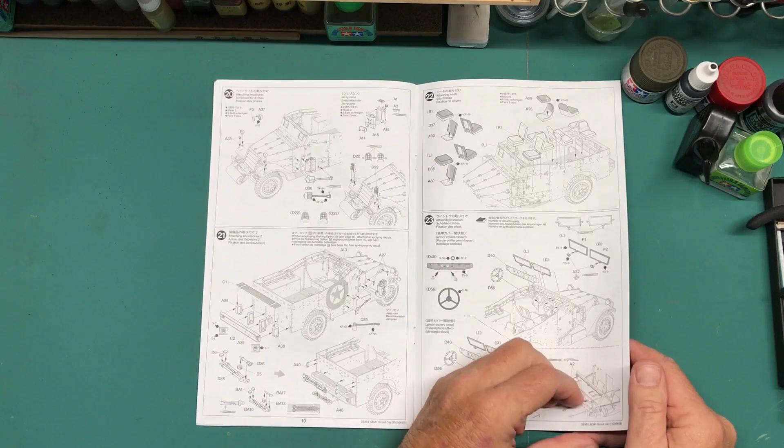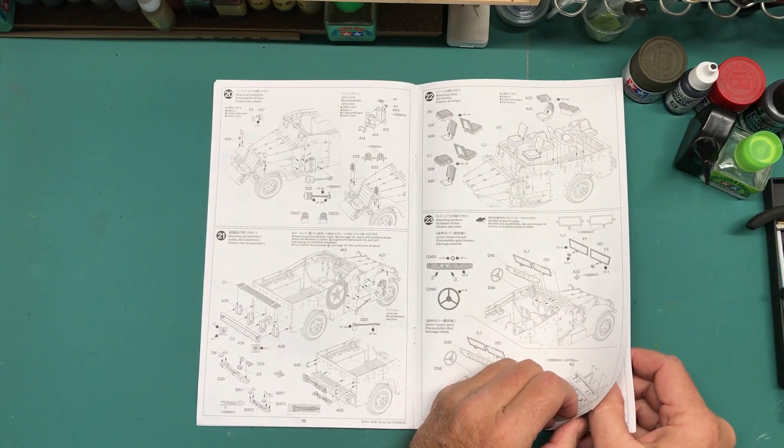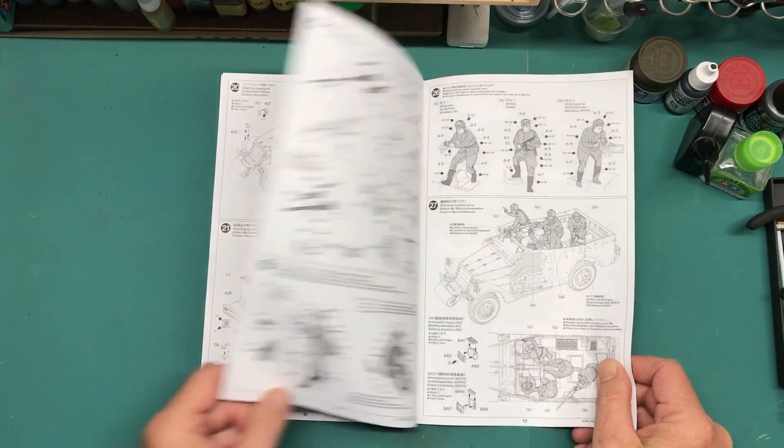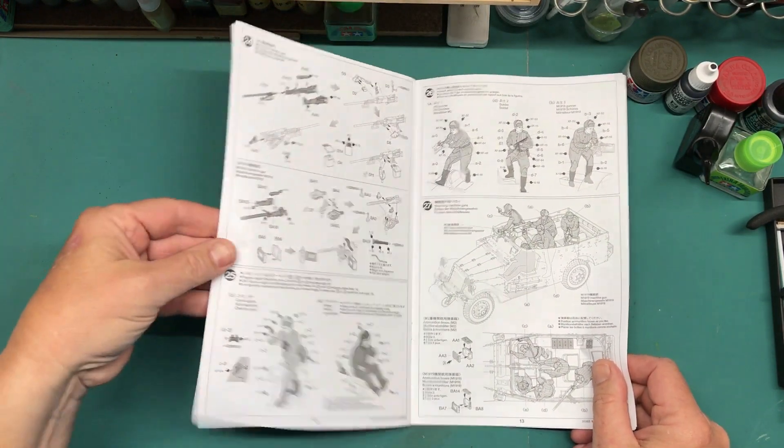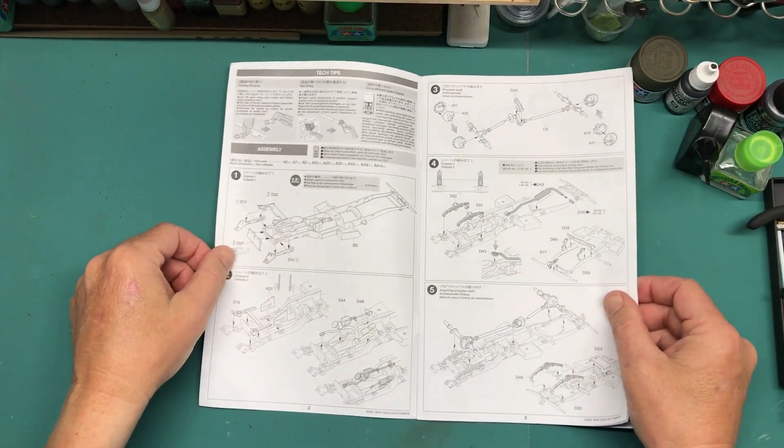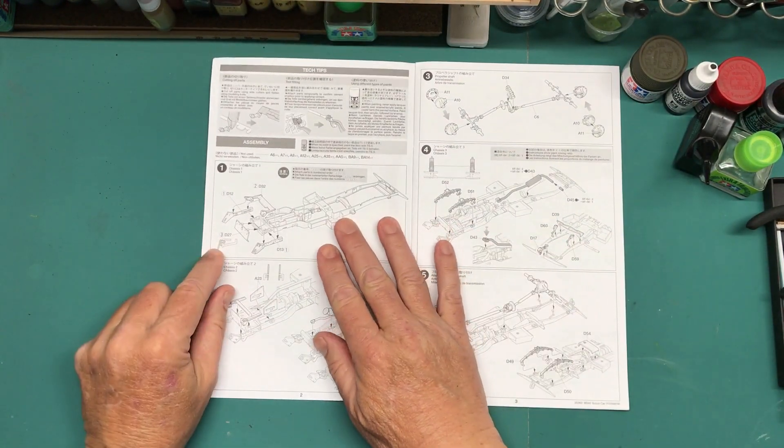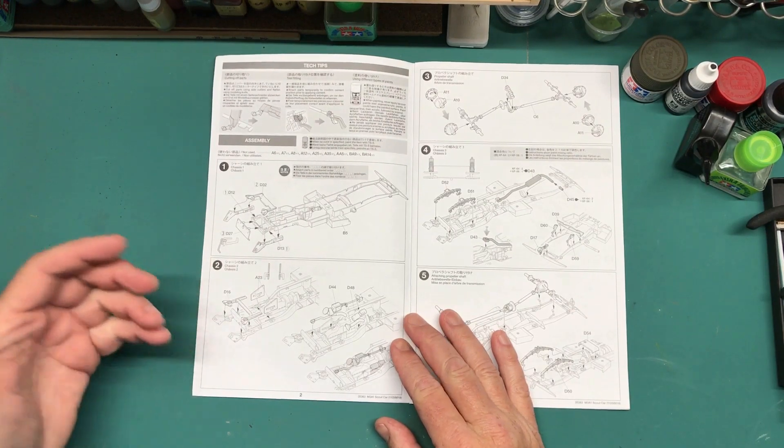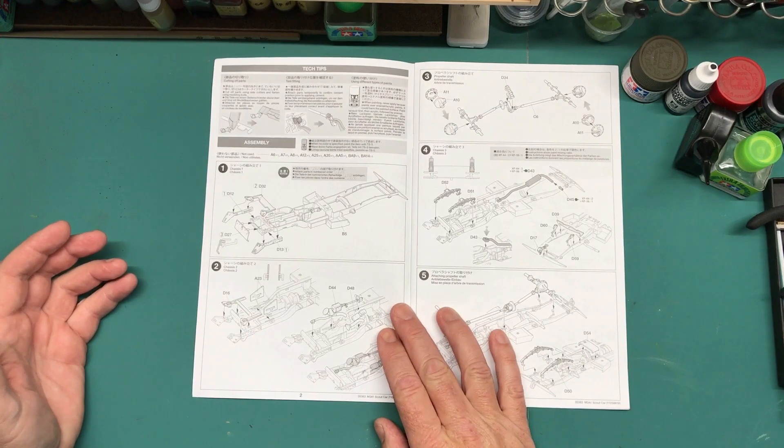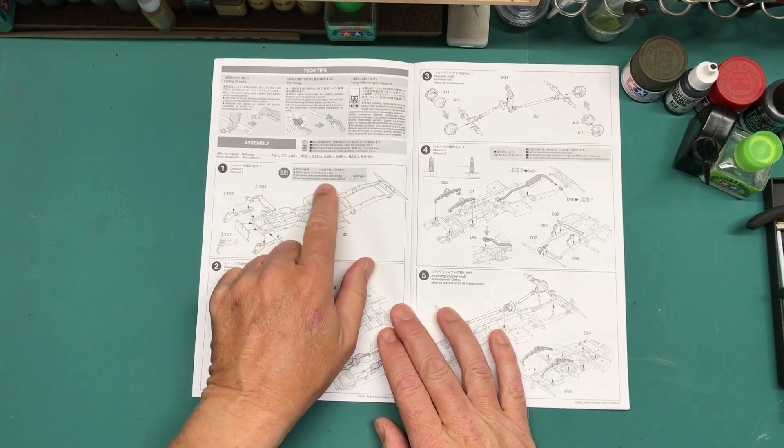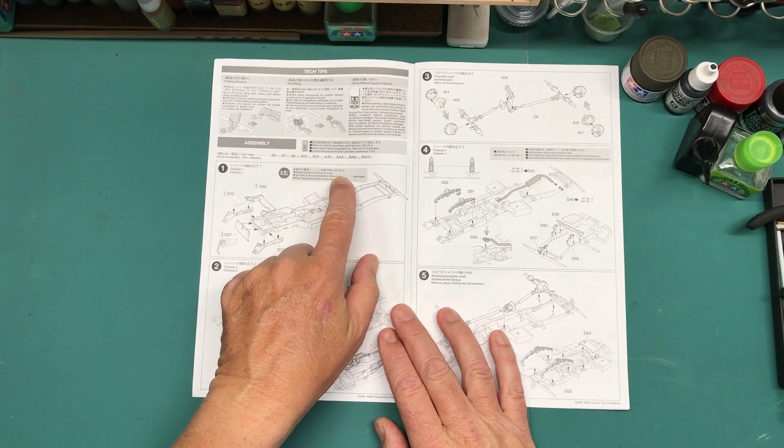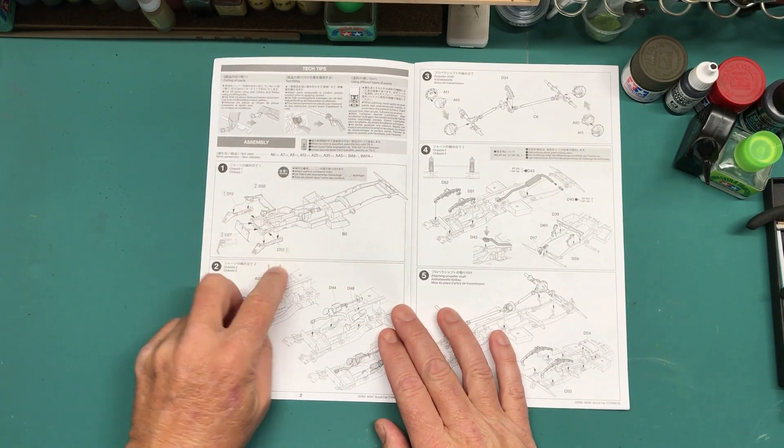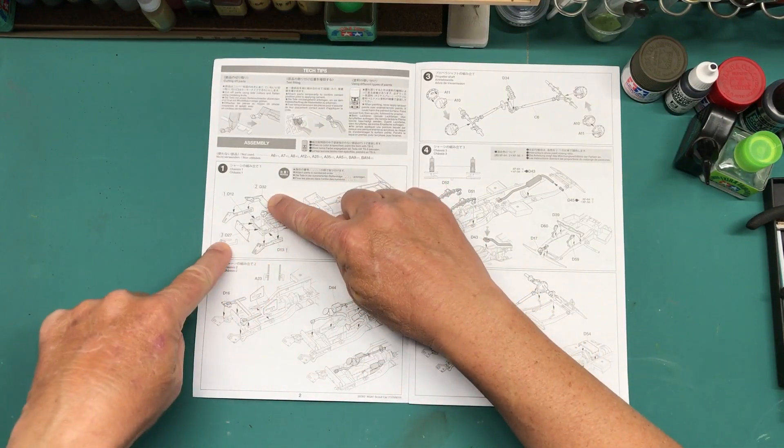But it basically goes through everything in the kit here, typical Tamiya instructions. In each step it will tell you what needs to be built, if a decal needs to be applied, if something needs to be painted, what order the parts need to be attached. So parts one, two, one and one, two and then three.